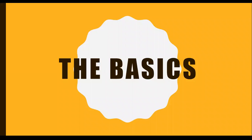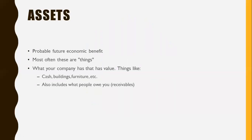So let's start with assets. Assets are things — the technical definition is they're things with probable future economic benefits. An easier way to think about it is they're often things you can touch, like a car or cash or a house. So tangible things are the easiest ones to visualize. Another way to think about it is things in your company that have value — things that somebody else would give you money for would be assets. So things like cash, buildings, furniture — those are the most straightforward ones.